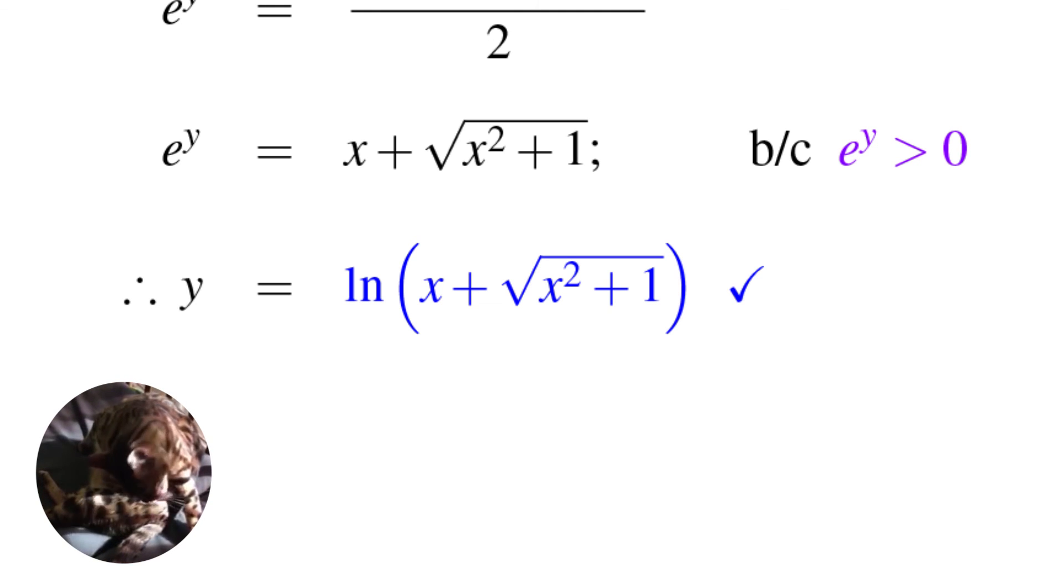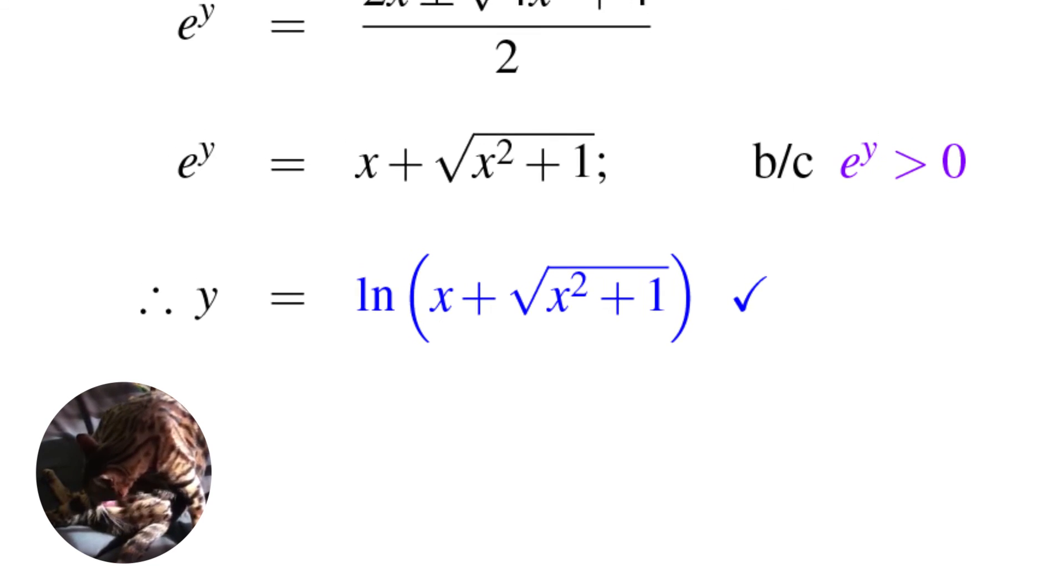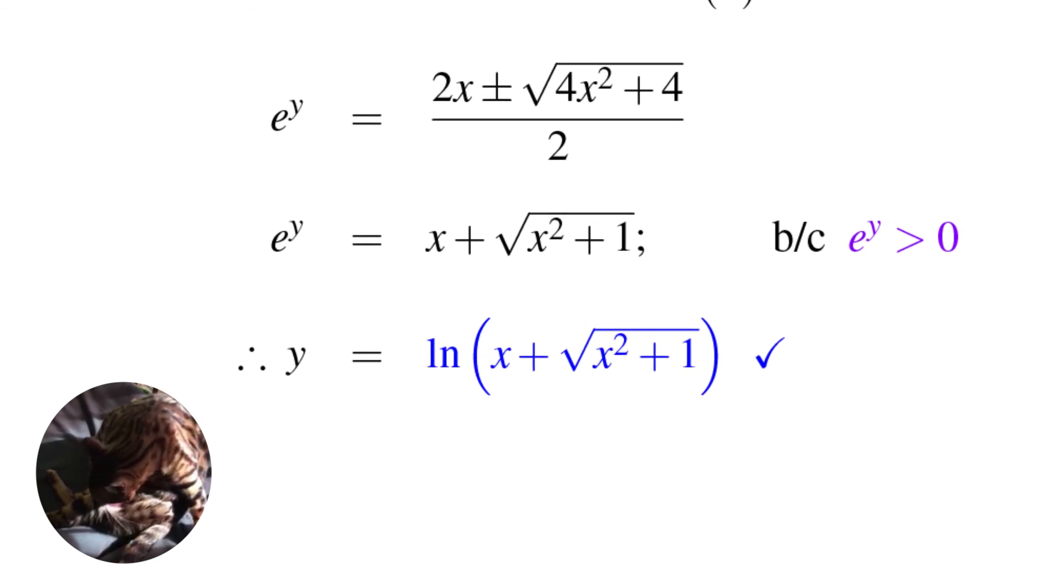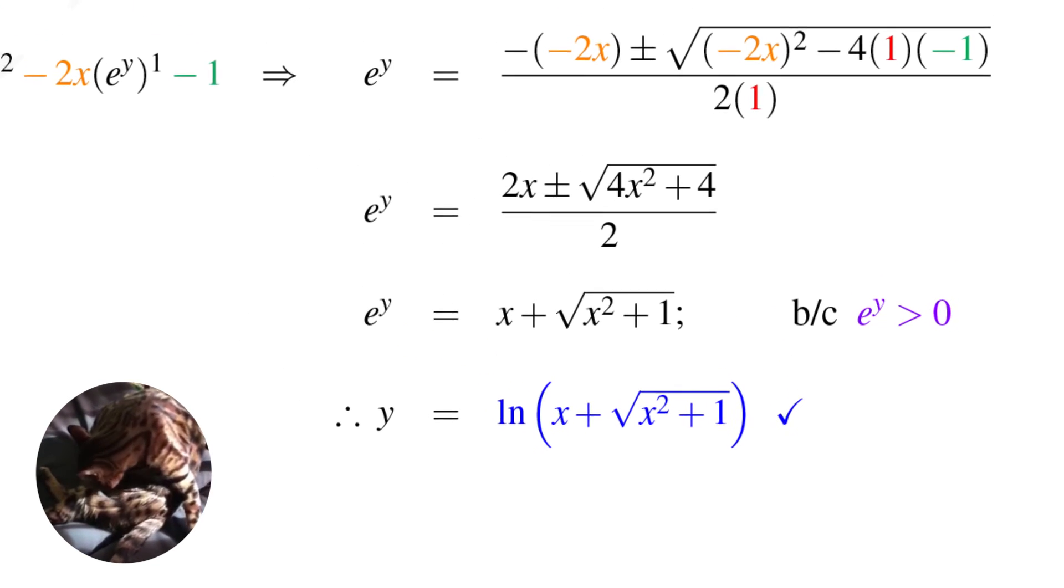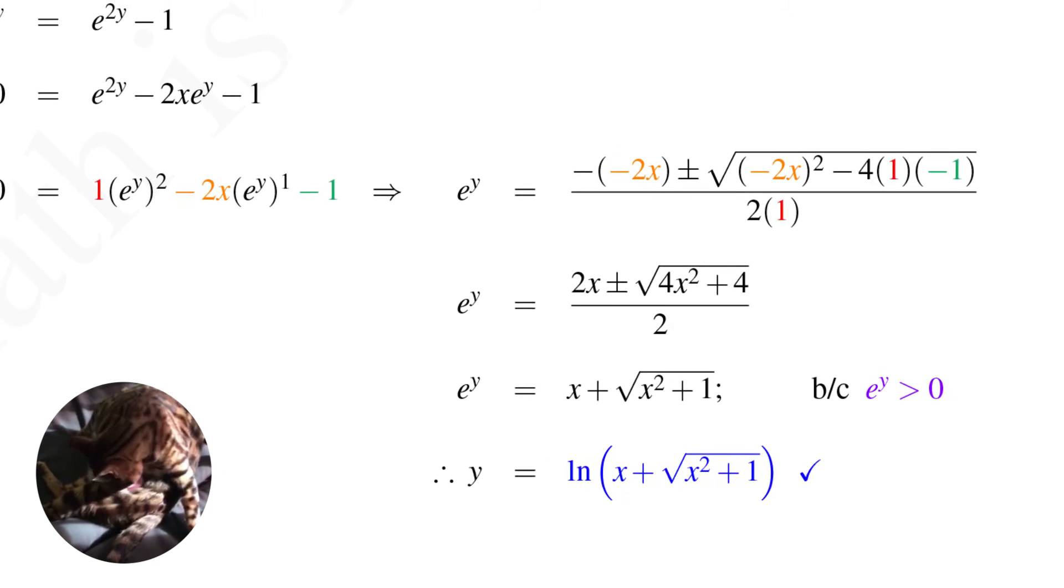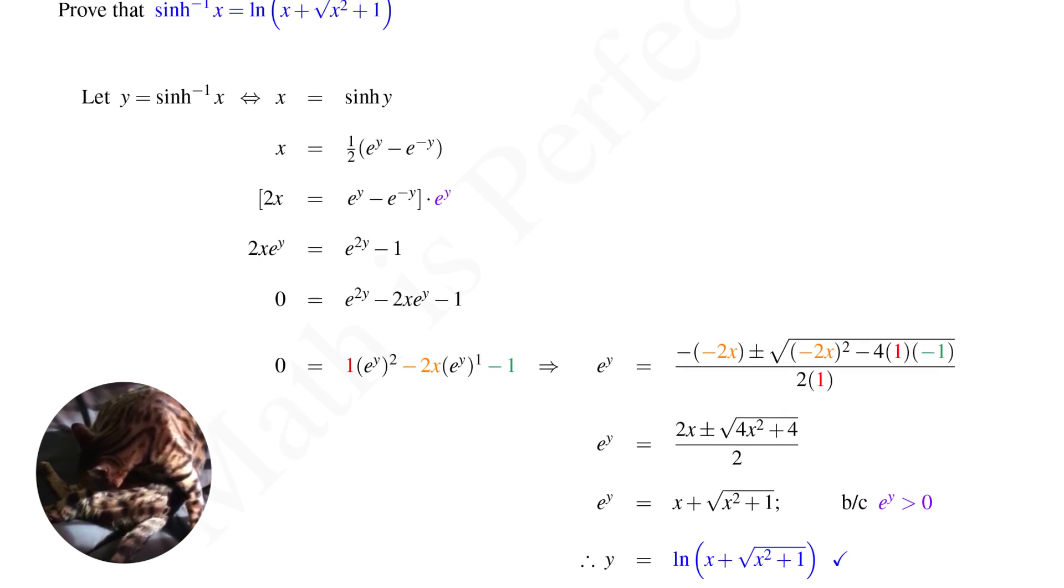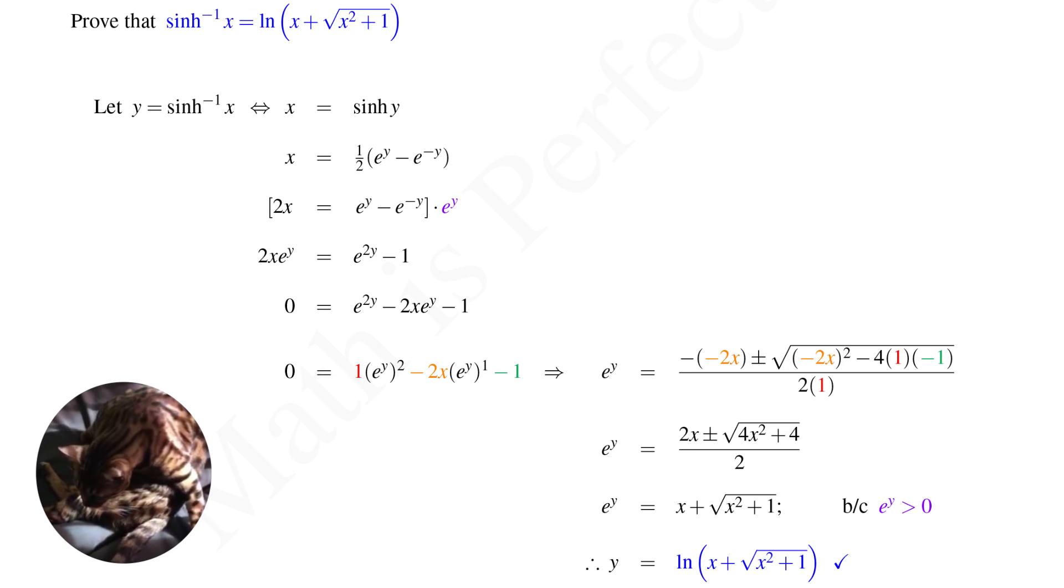Now remember, y was a substitution for inverse hyperbolic sine of x. So we've proven that inverse hyperbolic sine of x is indeed natural log of the quantity x plus square root of the quantity x squared plus 1. Thanks for playing, and I'll see you next time.